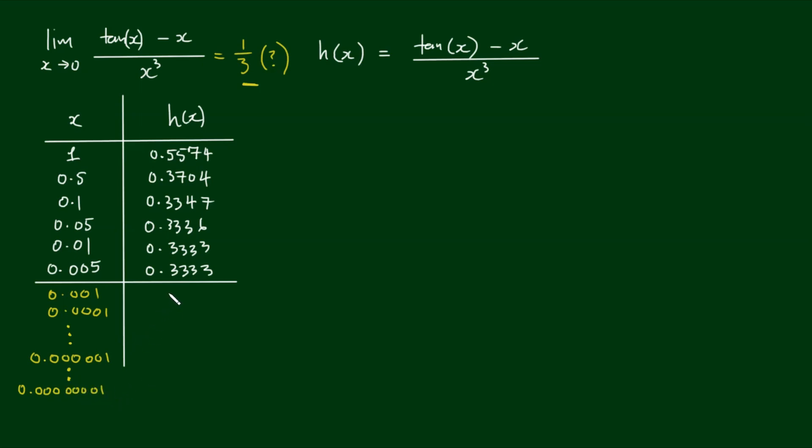So for 0.001, we still get 0.3333. For 0.0001, we still get 0.3333. So it's looking fairly conclusive. For 1 by 10 to the negative 6, it's still equal to 0.3333.